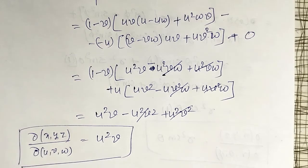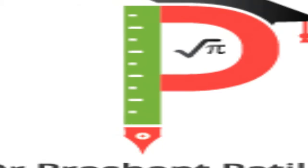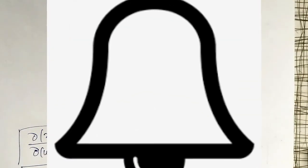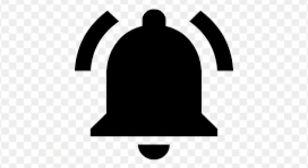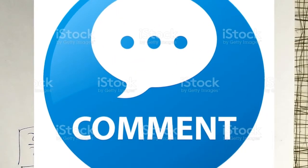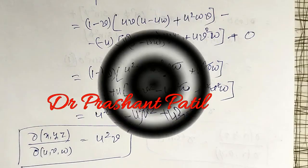Okay, like this. More examples on this Jacobian I am going to solve in my next video. If you have not yet subscribed to my channel, please subscribe. Don't forget to hit the bell icon so that you will get notifications of my next videos. Like this video, comment, and also share this video. Thank you friends.